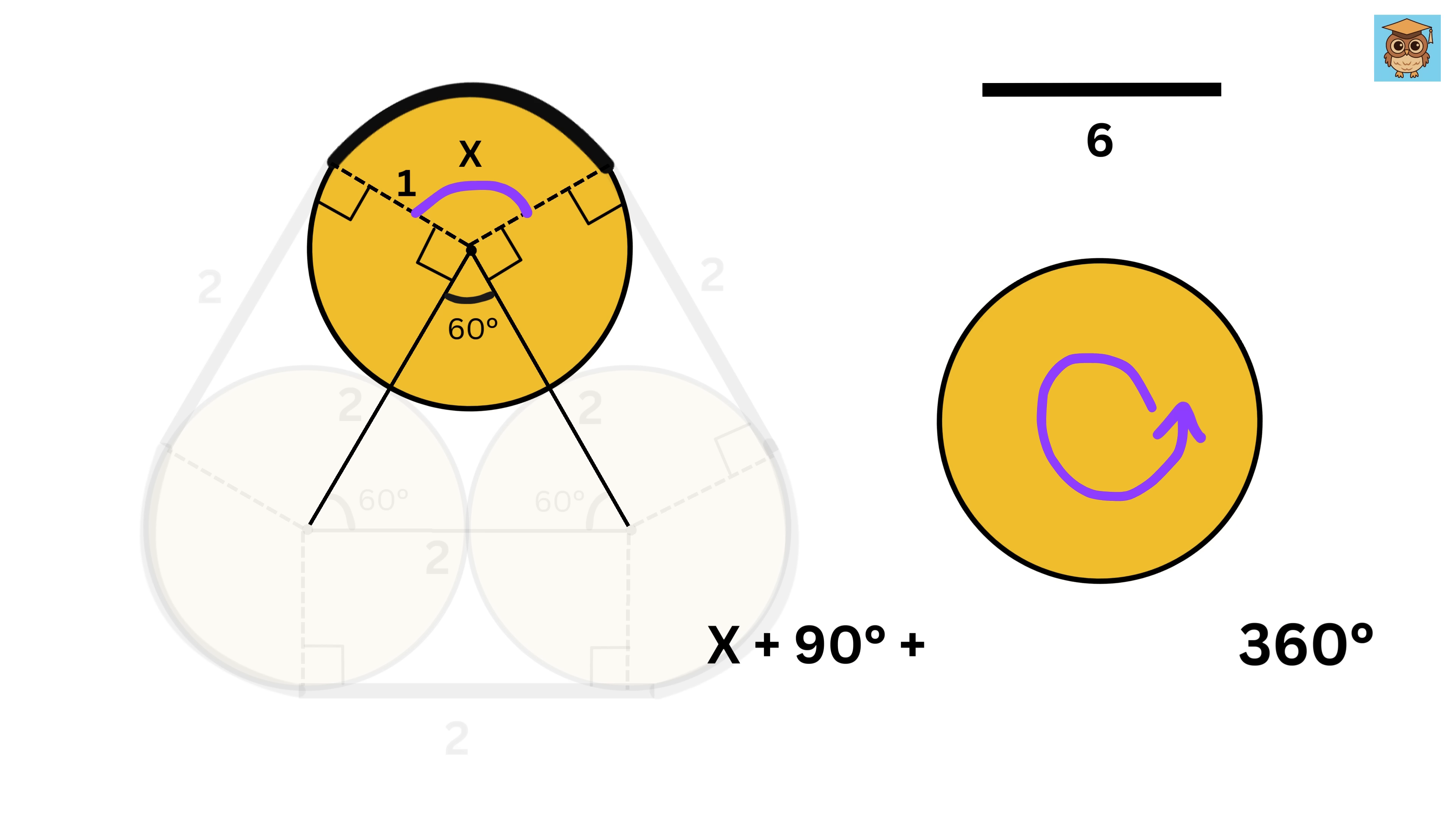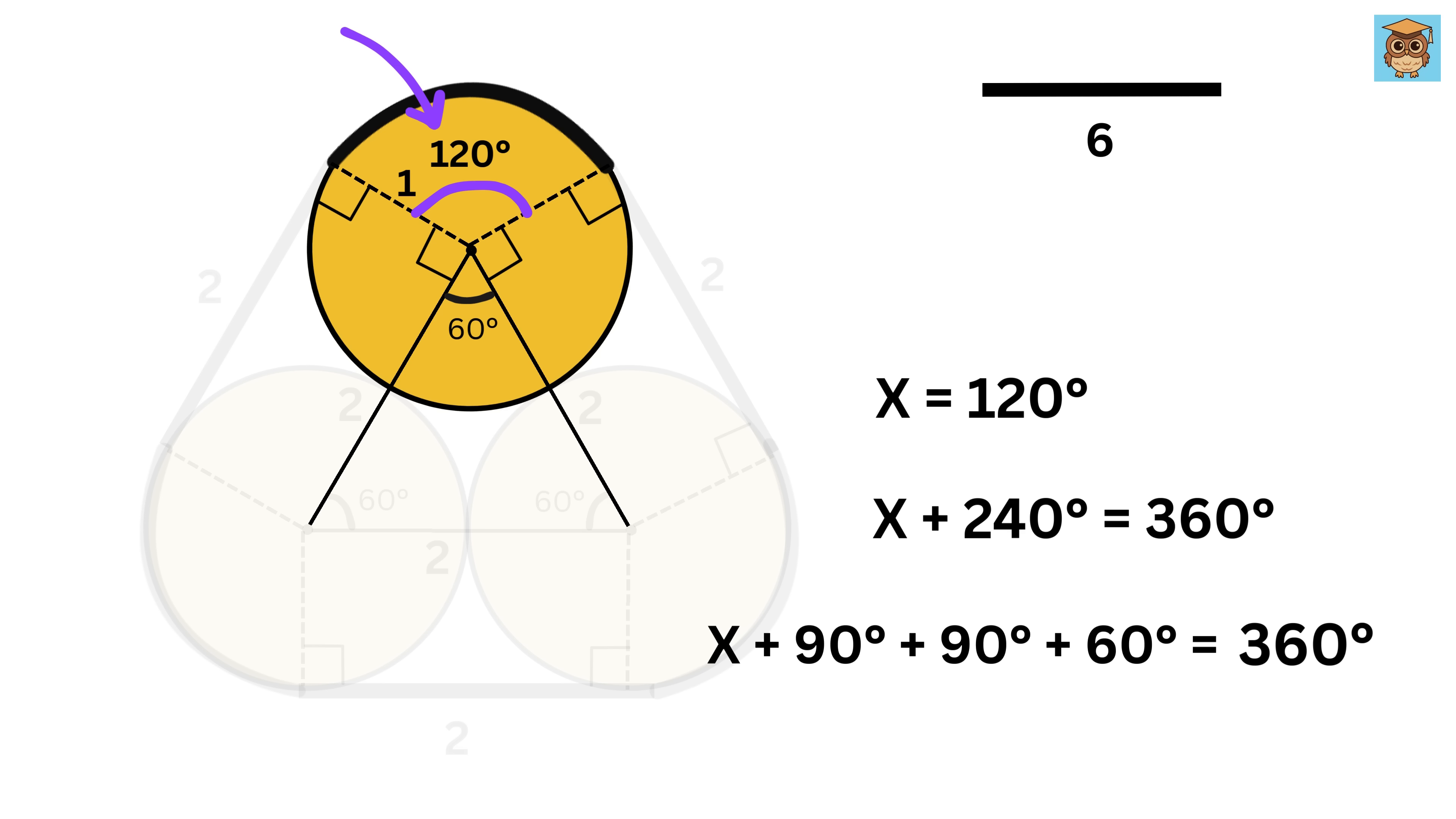Now let us figure out the length of the curved parts. Let this central angle be equal to x. We also know that the angle of a full circle is 360 degrees, so we have x plus 90 plus 90 plus 90 plus this 60 equals 360. So x equals 120 degrees.